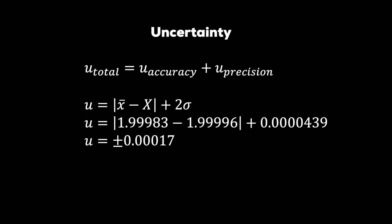Putting this all together, the total uncertainty is due to both accuracy and precision errors. Hence, we'll add the difference between the mean measurement and the actual gauge diameter to the two sigma value. This gives us a total uncertainty of plus or minus 0.00017 inches.